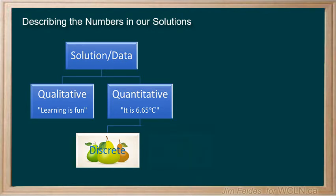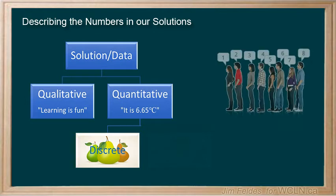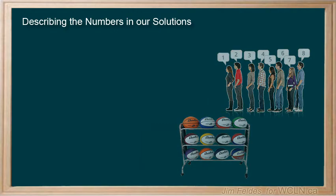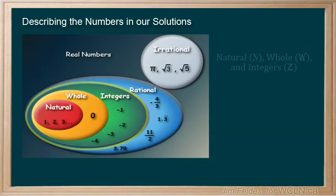Discrete data has whole number values, usually of things we count like the number of people in a line or basketballs on a rack. There are no part people or fractions of objects like basketballs. This category would include natural and whole numbers, as well as integers.